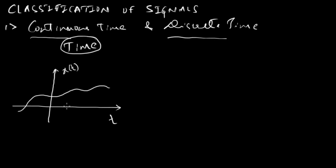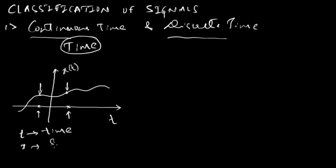Because if you want to know the value of x of t at any particular value of time t, it is defined. This means x of t is defined for all values of t, and hence it is called a continuous time signal. Here, t represents time, x is our signal, and x of t is our continuous time signal.